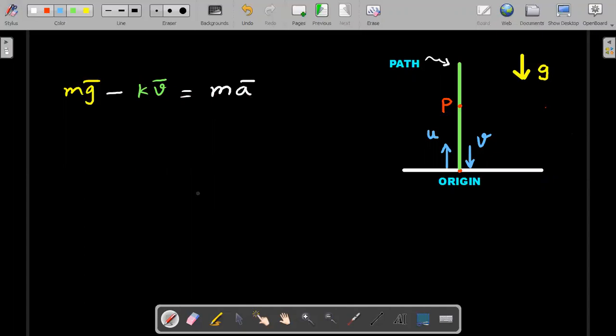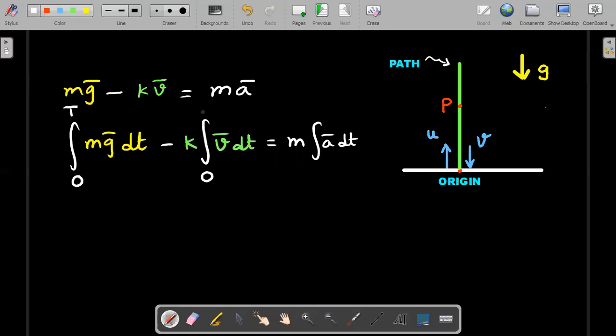So I'll now integrate both sides over the time. I'll write it as mg bar dt minus integration kv bar. I'll bring k out because that's a constant of proportionality and then write the v bar dt inside for my convenience. On the other side, I'll do the same thing with mass m out, integral a bar dt. Let's do the integration for the whole duration of time of flight, not just up or down. The time limits would be 0 to T for each of these integrals.